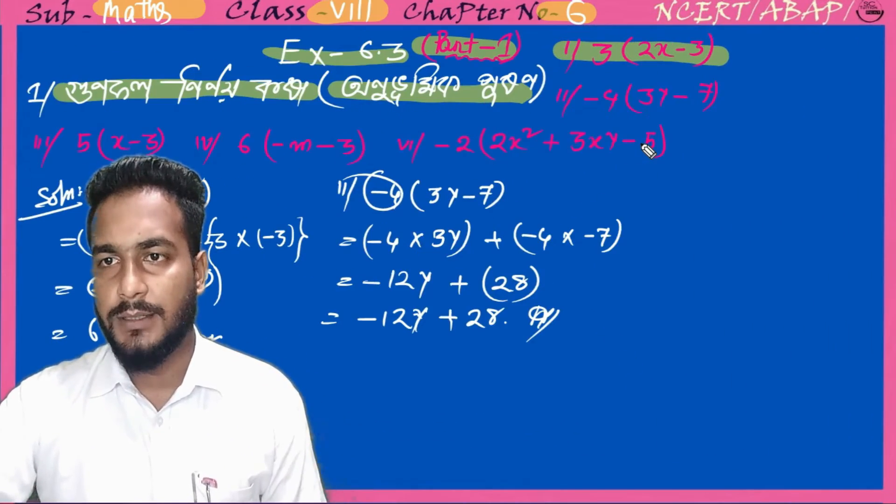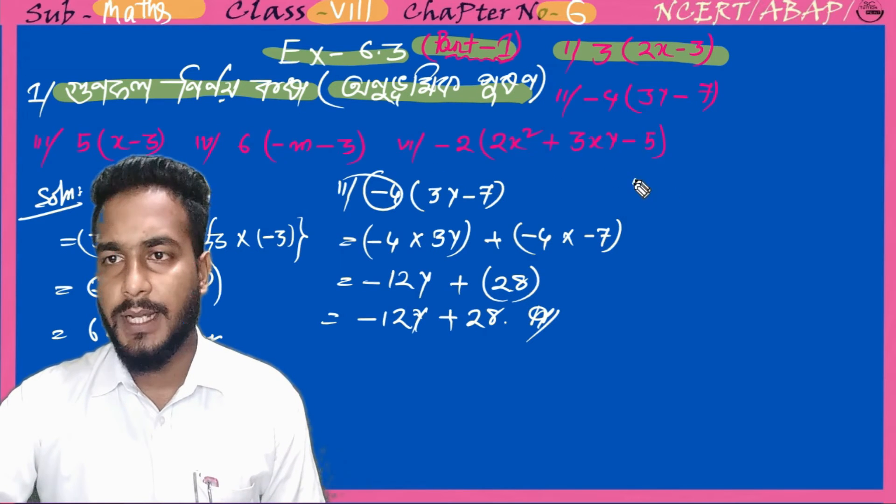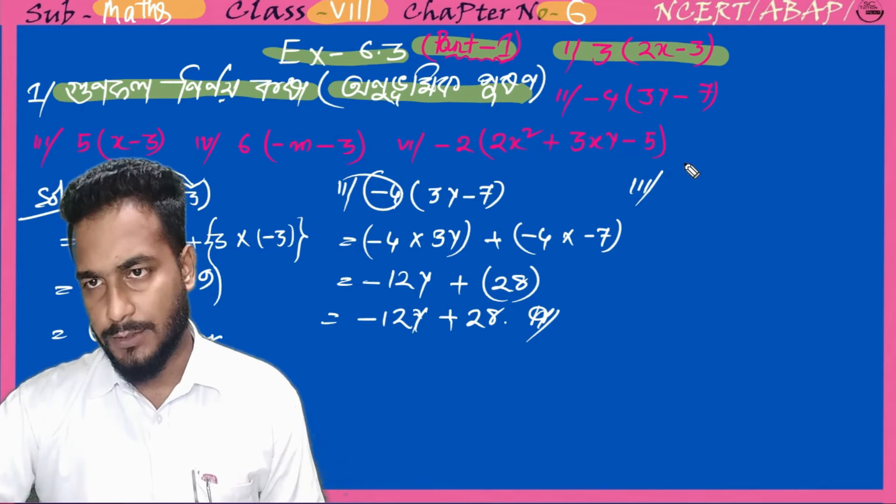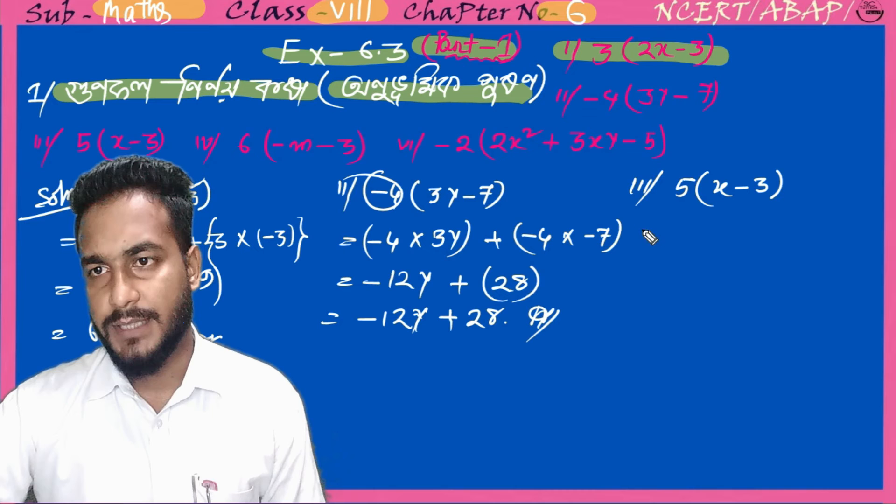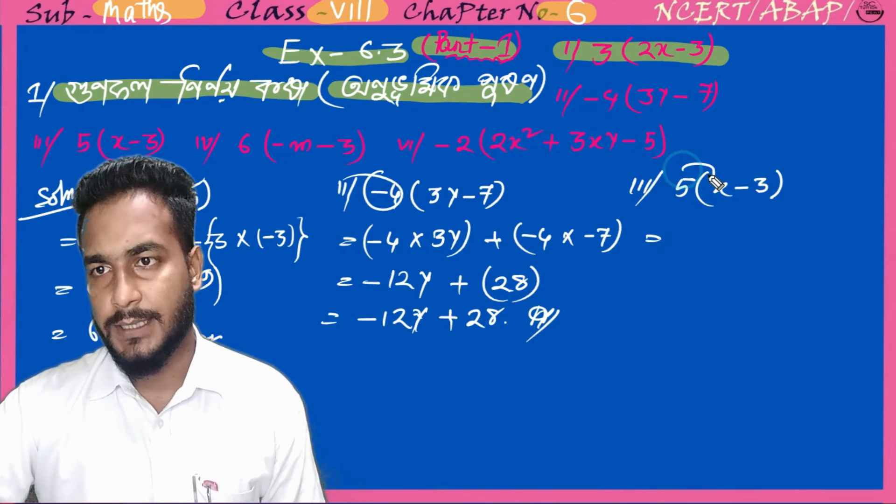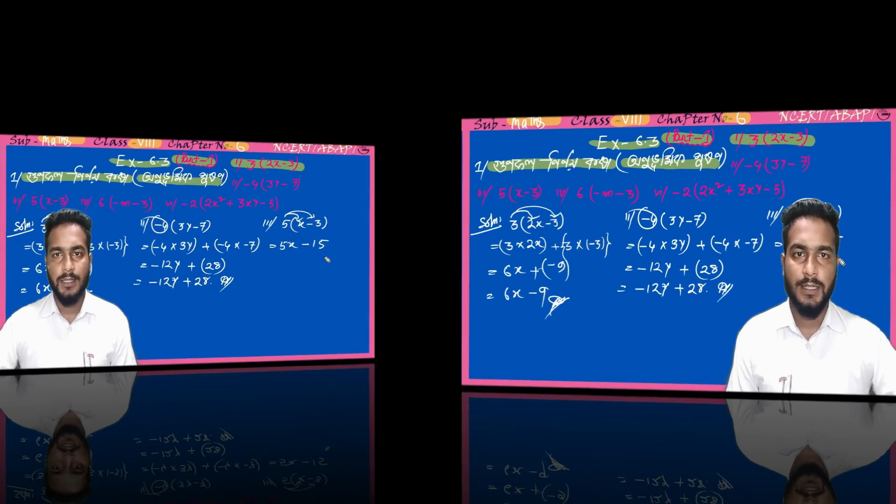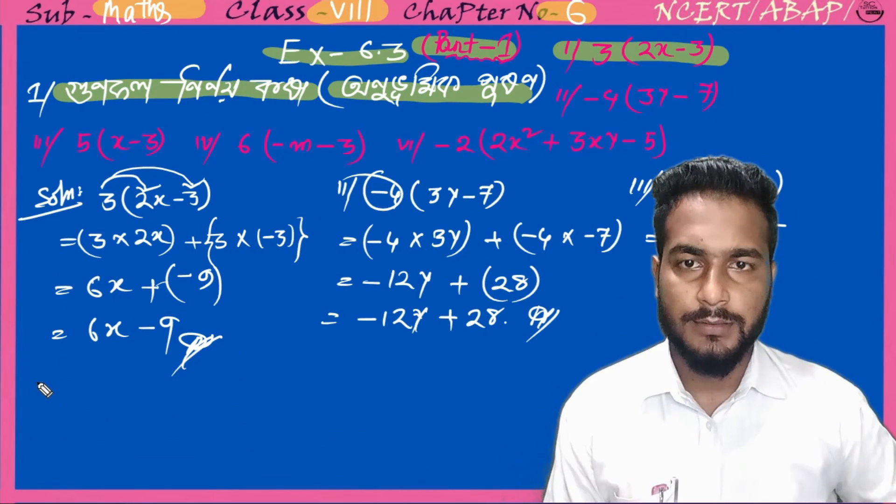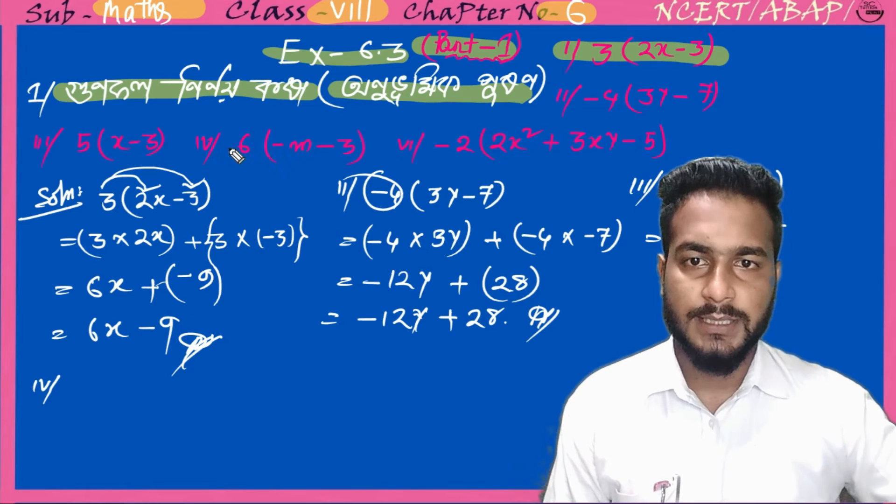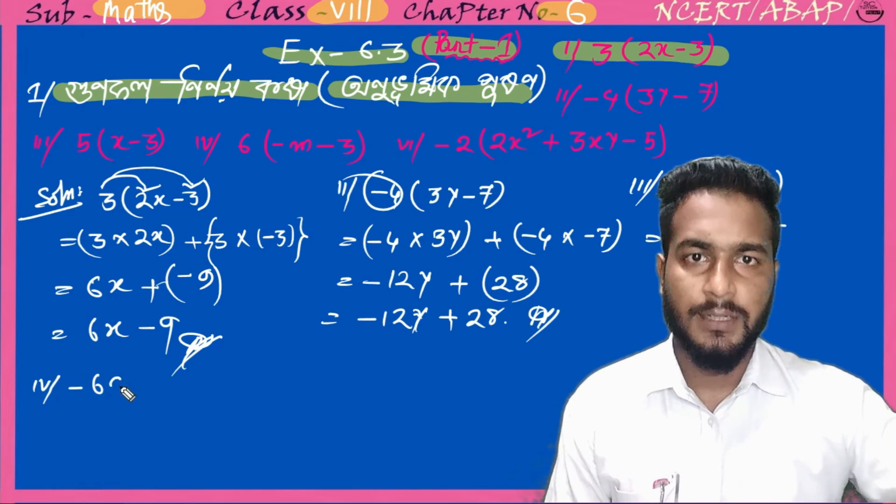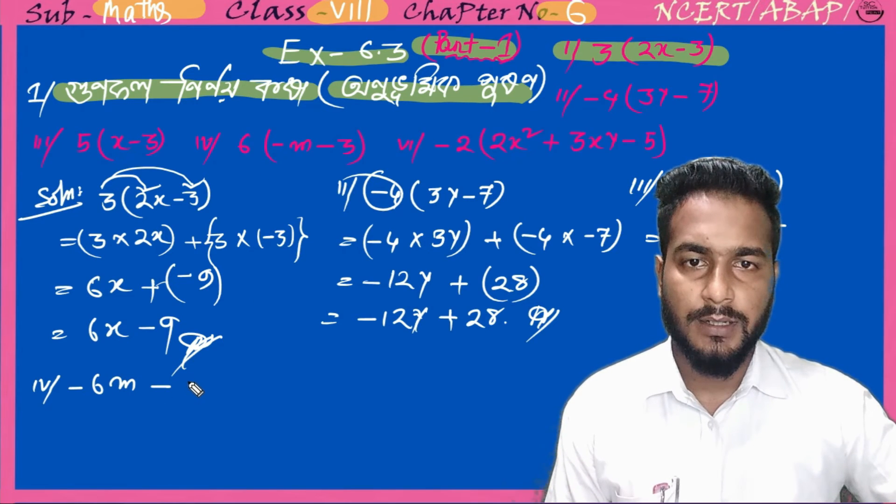Number 3 is 5 times x minus 3. So I will directly write 5x plus minus 5 into 3. The result is 5x minus 15, which equals the answer.